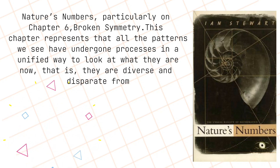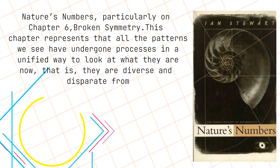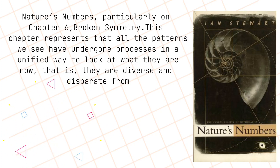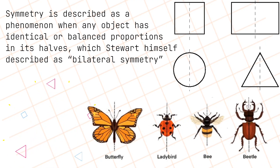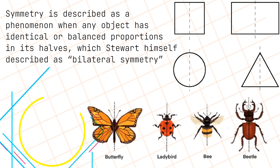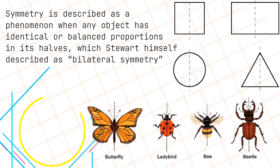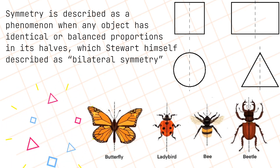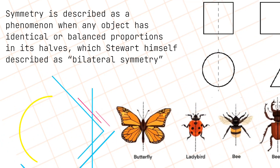This chapter represents that all the patterns we see have undergone processes in a unified way. They are diverse and disparate. Symmetry is described as a phenomenon when any object has identical or balanced proportions in its halves, which Stewart himself described as bilateral symmetry.